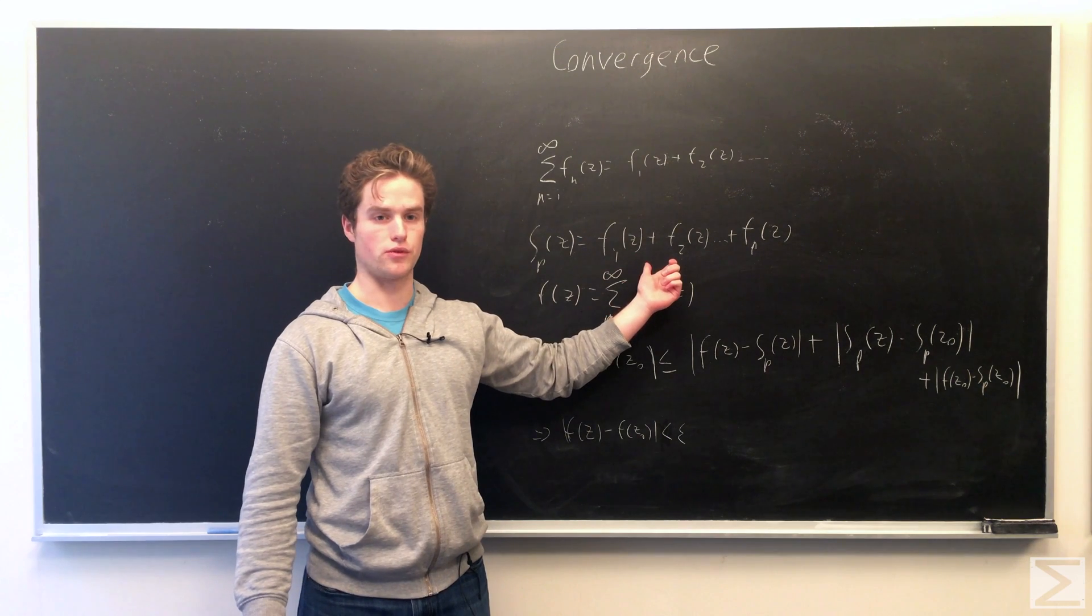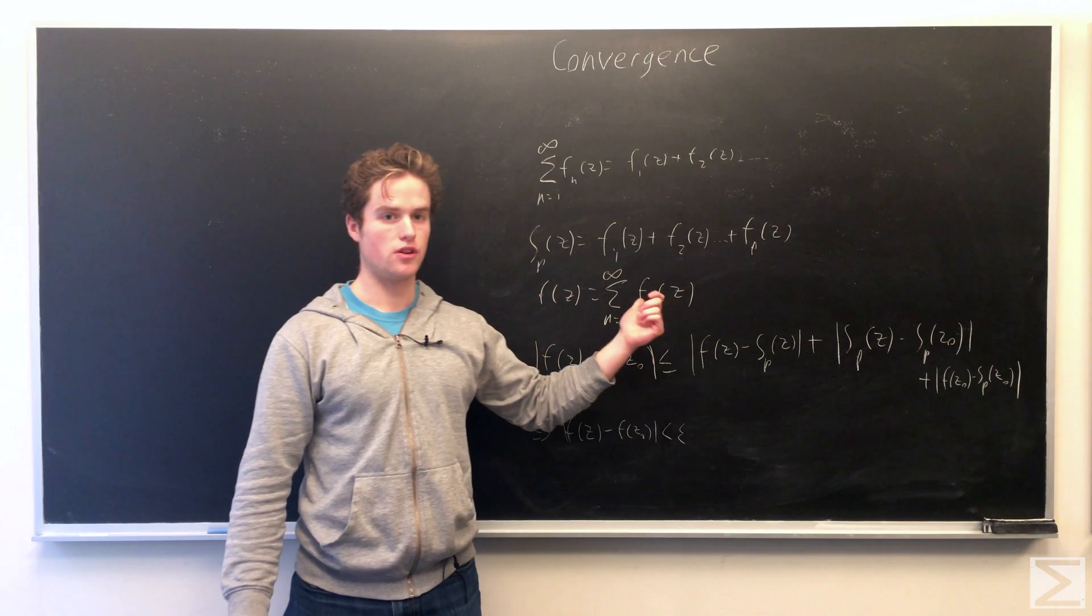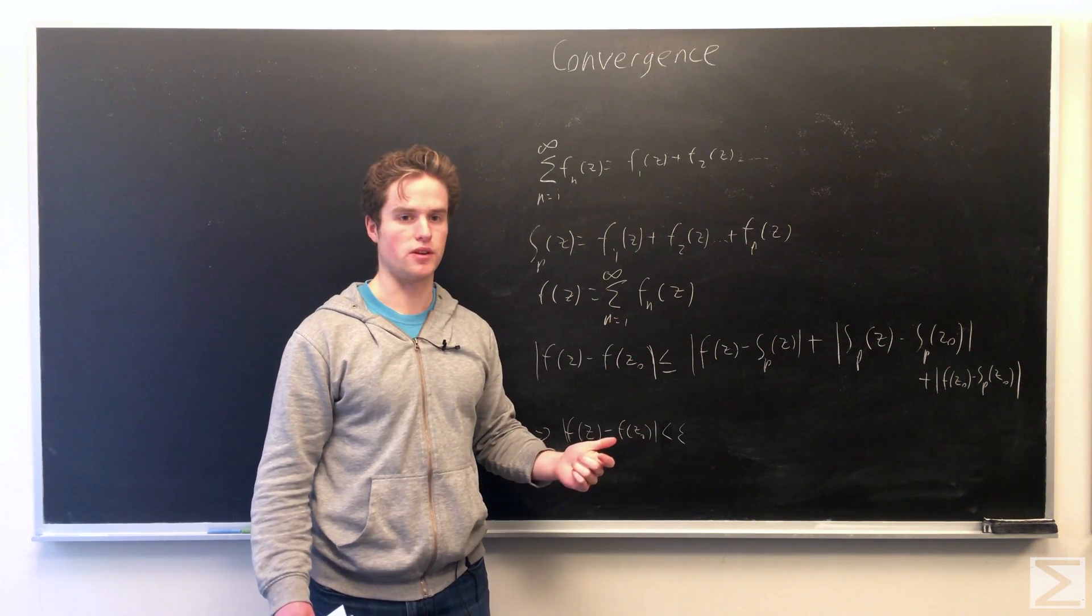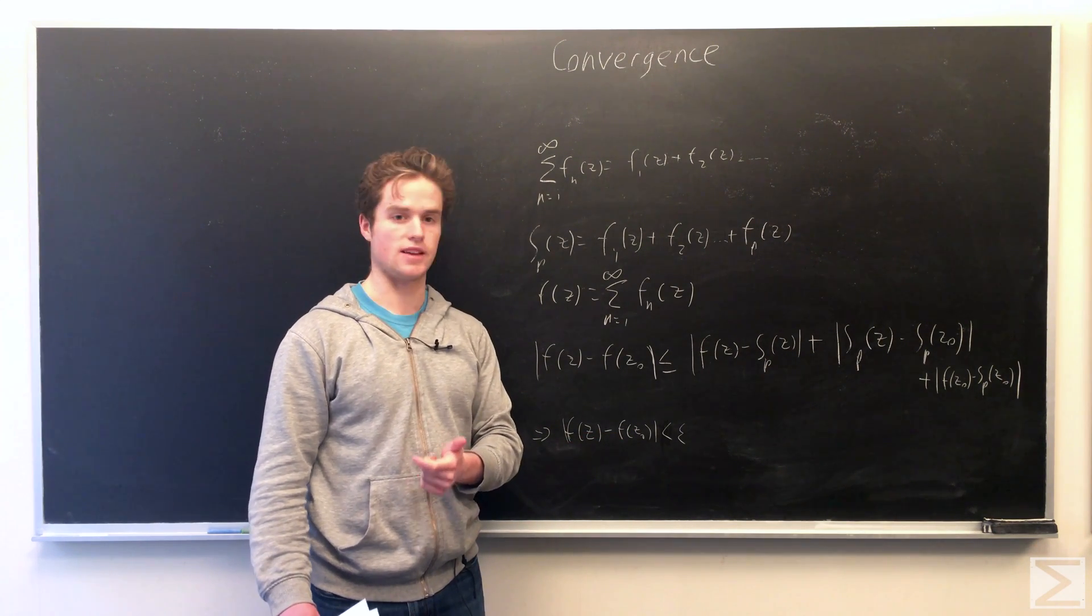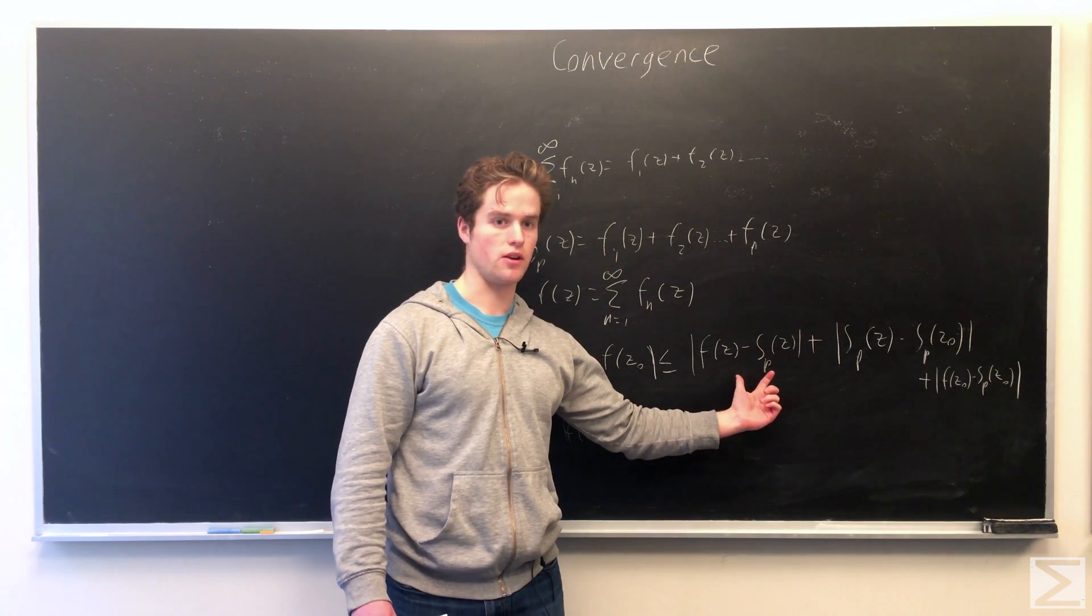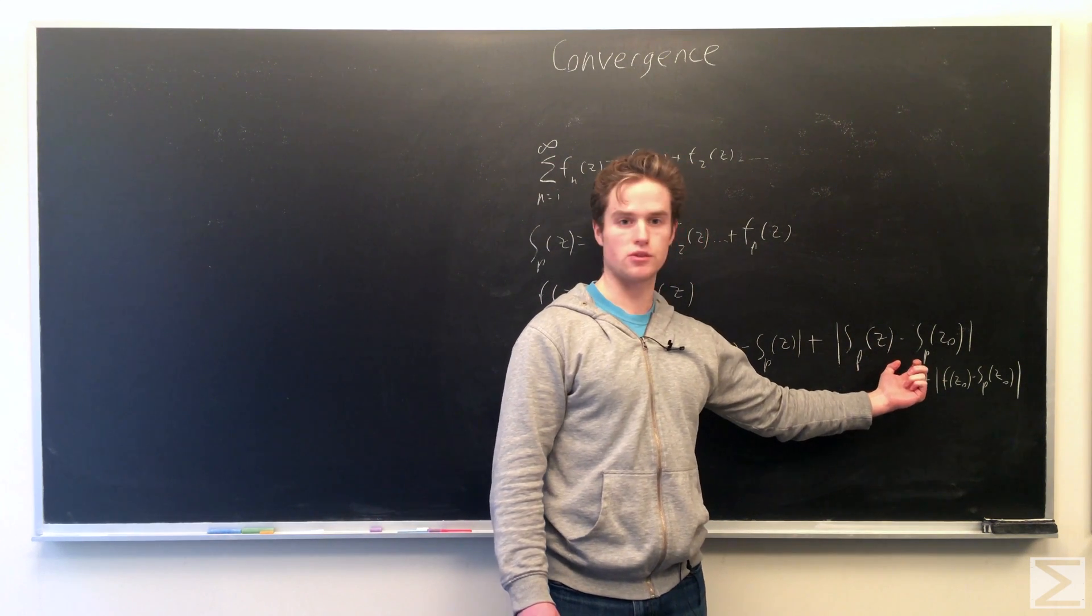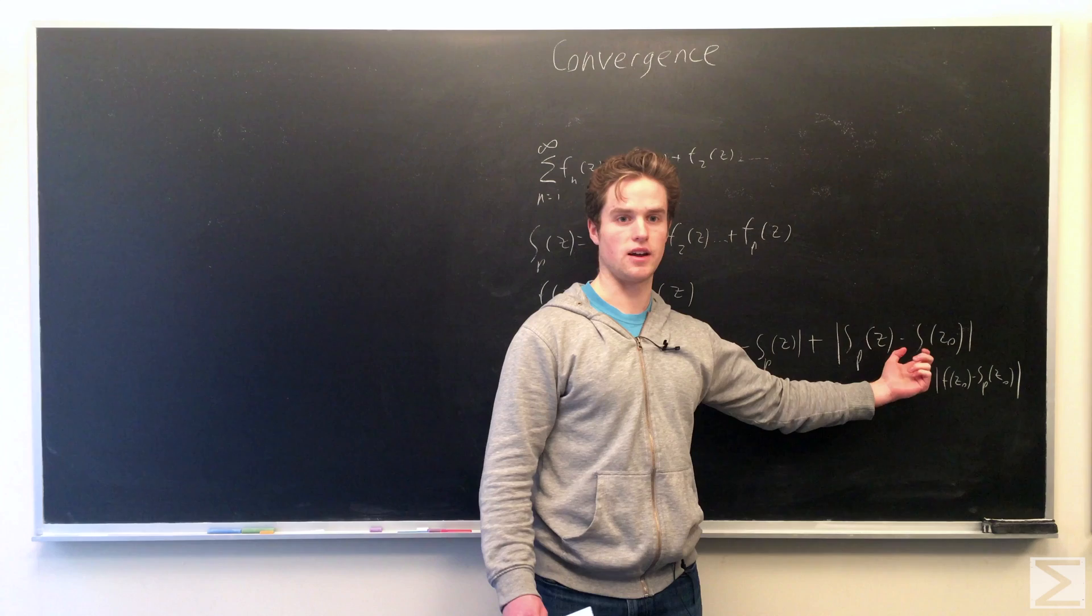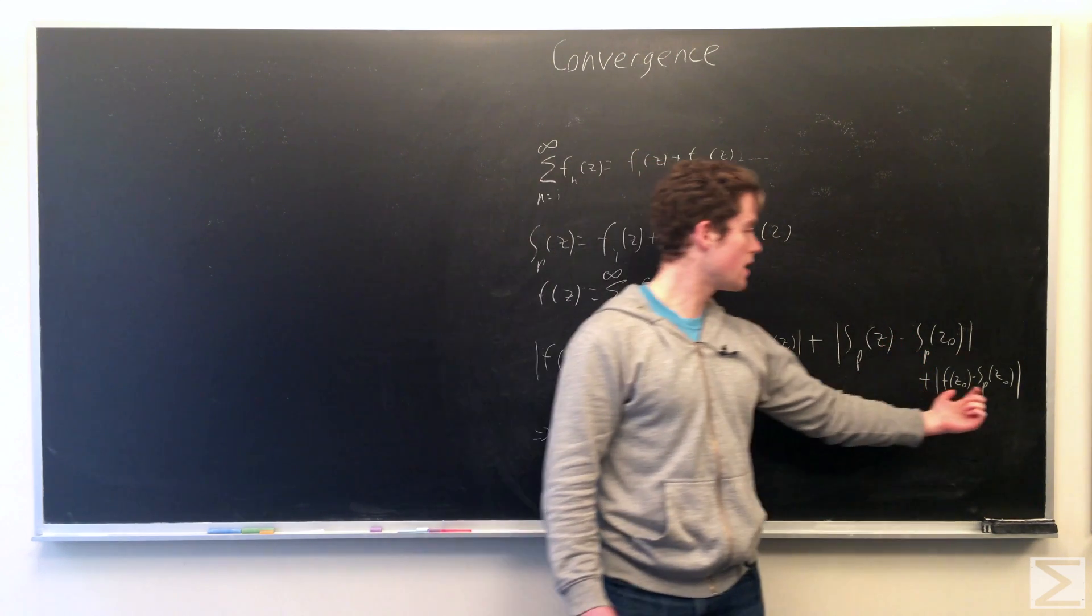We're assuming this is uniformly convergent. So for all z in our domain and P large enough, we can say the moduli of fp plus one of z plus fp plus two of z all the way to infinity is less than epsilon for P large enough. So for P large enough, we can say this is less than epsilon over three. This is just a difference between two continuous functions. So for z minus z naught less than some delta, we can say this is less than epsilon over three.